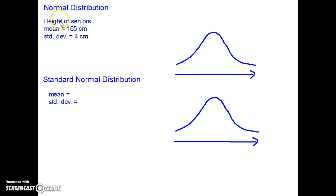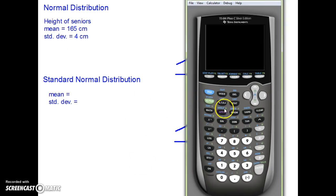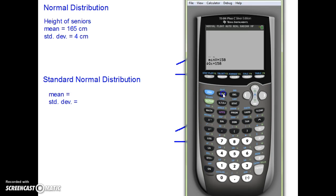Let's get started. Let's say today I take the height — I collect all the seniors at the school, collect their height and record everyone's height, and I will be able to get the mean and the standard deviation with my GDC. If you don't remember how to do that, here is a quick review.